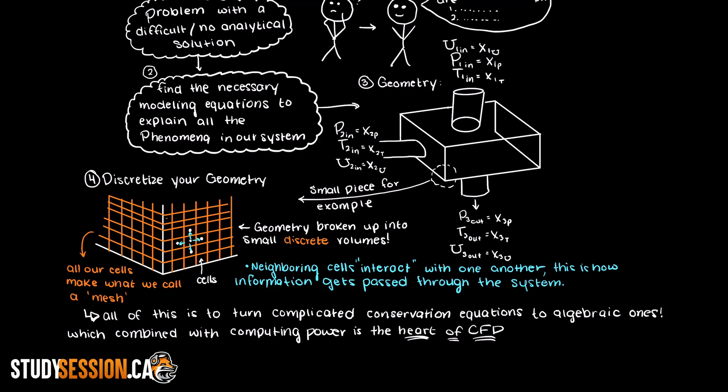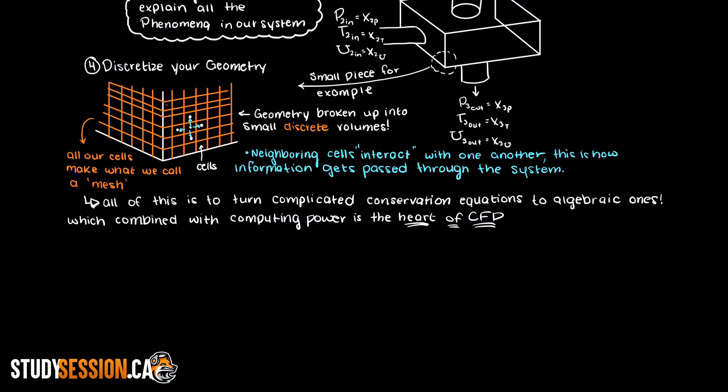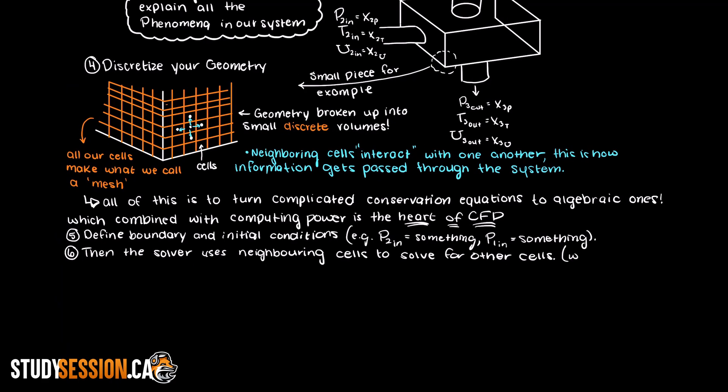Once the geometry and mesh of the simulation are created, we define the boundary and initial conditions for the simulation. These will help the CFD solvers by identifying starting values and conditions for our little volumes in the mesh. Through such, the solver can then use the values applied to the mesh and compute neighboring cells using the algebraic equations we talked about earlier. And then these neighbor cells will help find values of their neighbors, and so on. This will continue iteratively until all the relevant differential equations in our solver are satisfied.